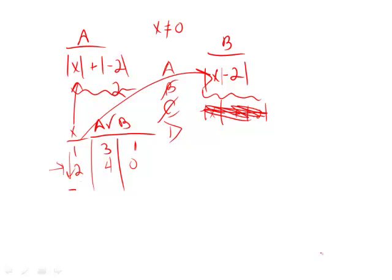How about negative 1? Well, plug it back in. Absolute value of negative 1 is 1. 1 plus 2 is 3. That's great. And then we go to column B. We plug in negative 1. Negative 1 minus 2 is negative 3. Absolute value is 3. Wait a second. They're equal.